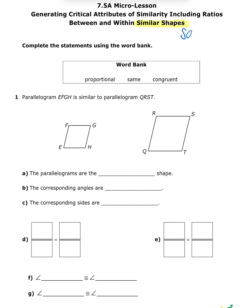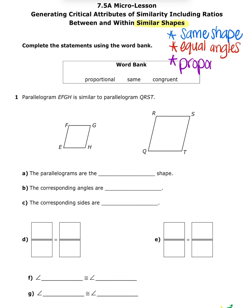First, the figures have to be the same shape — you can't compare a triangle to a circle, it has to be the same shape compared to the same shape. Second, they have to have equal angles. Third, they need to have proportional sides, meaning if we set up a proportion they would come out equal. Those are our three rules: same shape, equal angles, proportional sides.